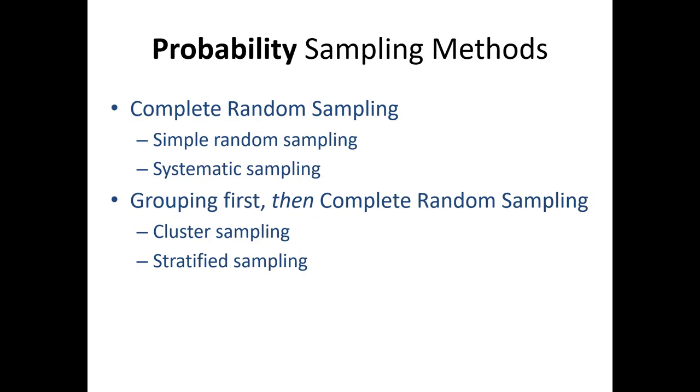In this video series, we're going to talk about three probability sampling methods: simple random sampling, cluster sampling, and stratified sampling. Systematic sampling is very straightforward and very related to simple random sampling. A quick Google search or reference in a text will show its similarity to the core concept of simple random sampling, hence we skip it in the videos.